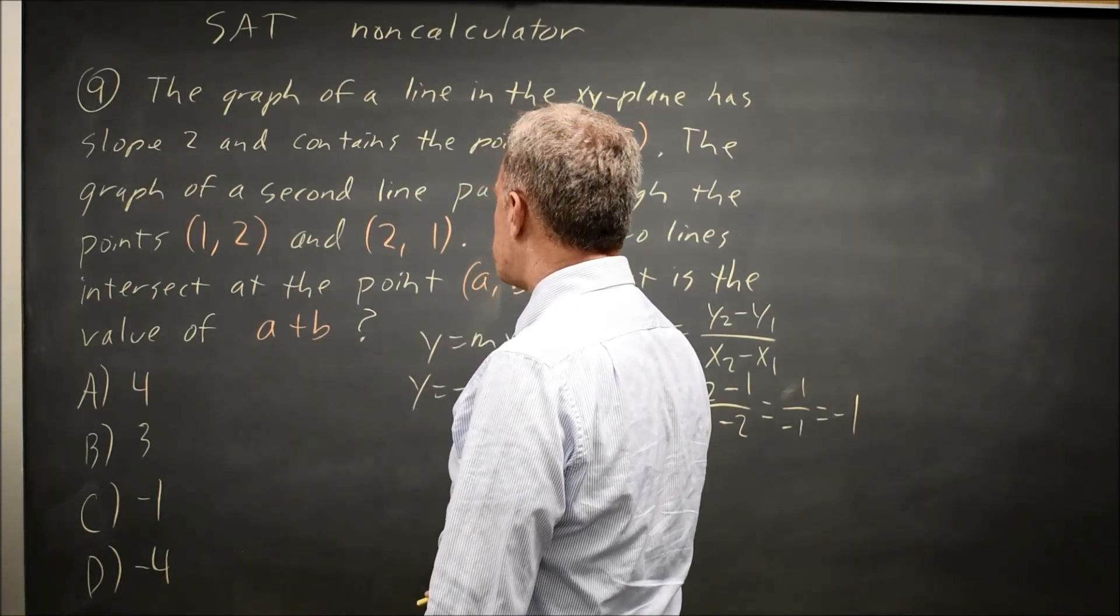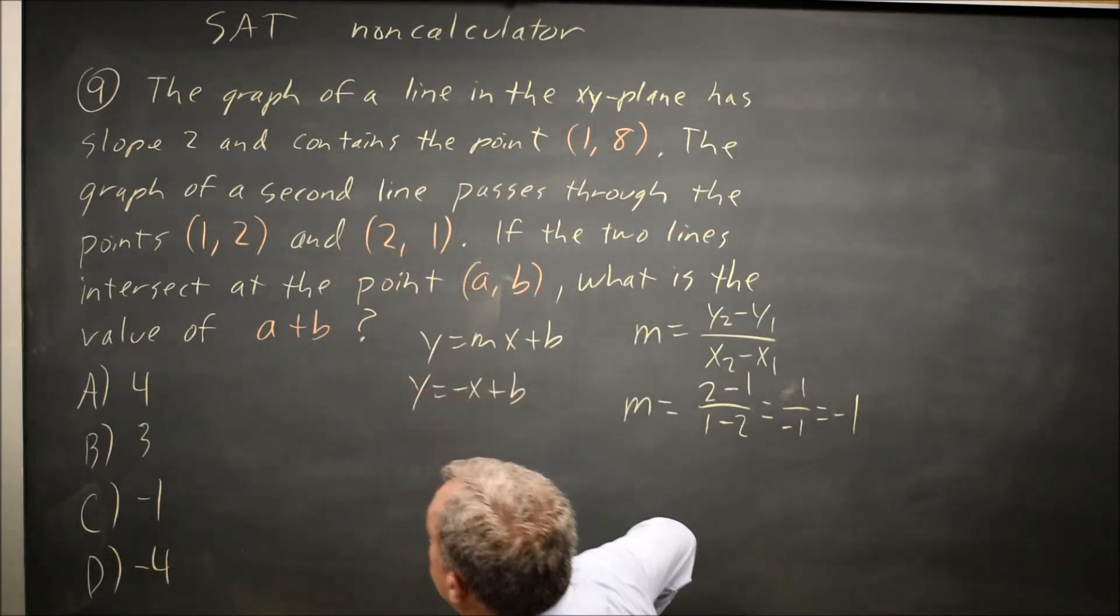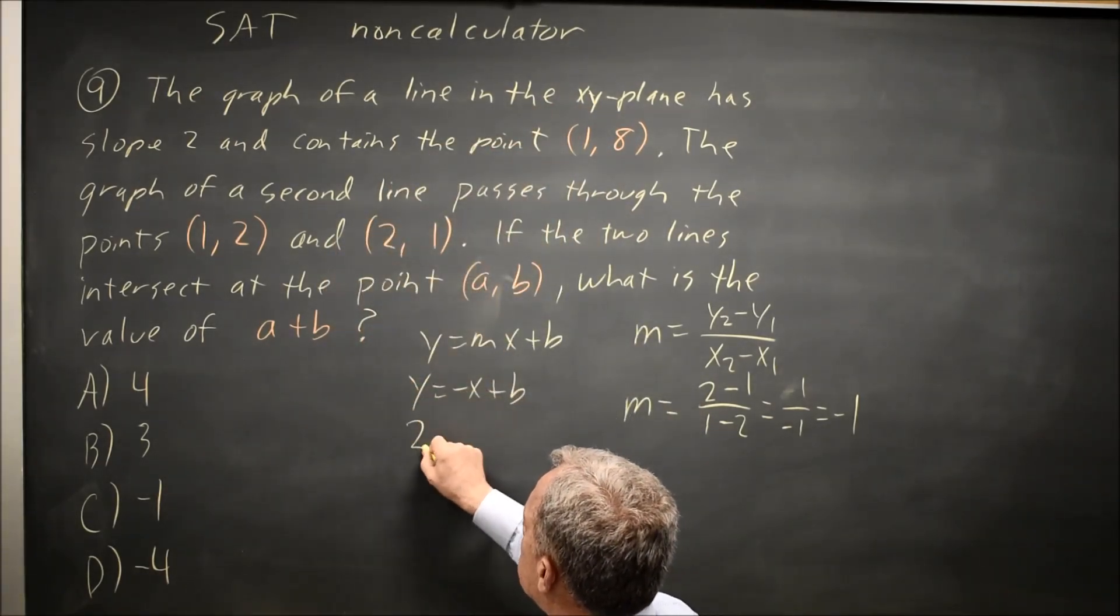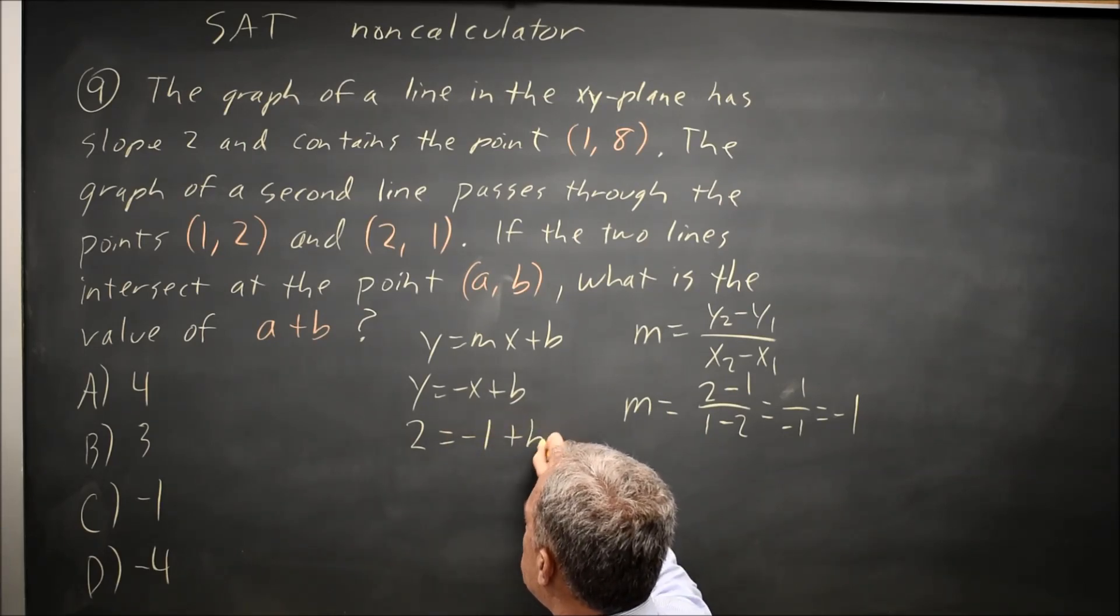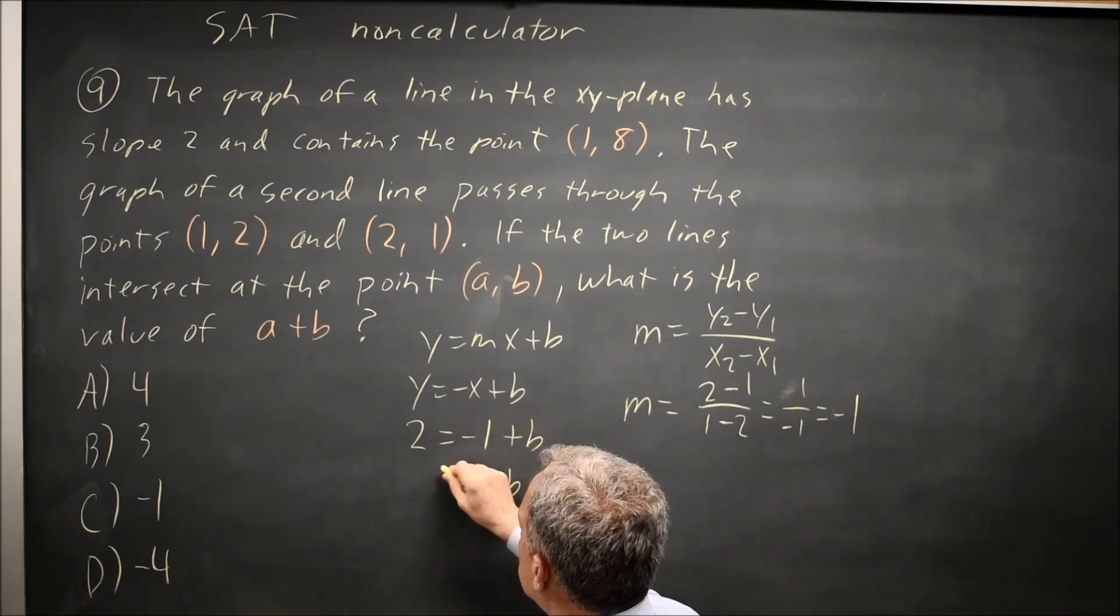If I substitute in either point, let's try (1,2). The y value is 2 when x value is 1, so 2 equals negative 1 plus b, b equals 3.